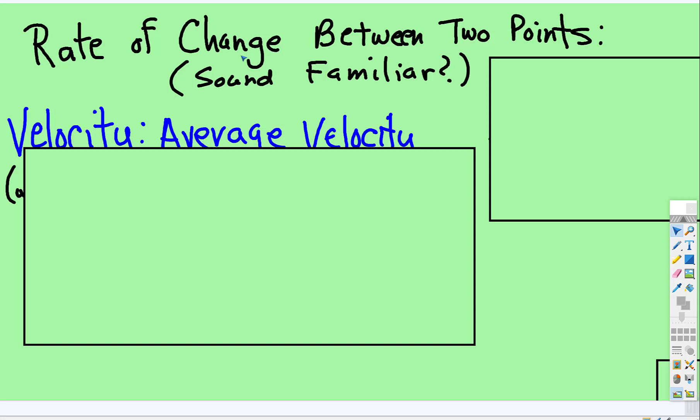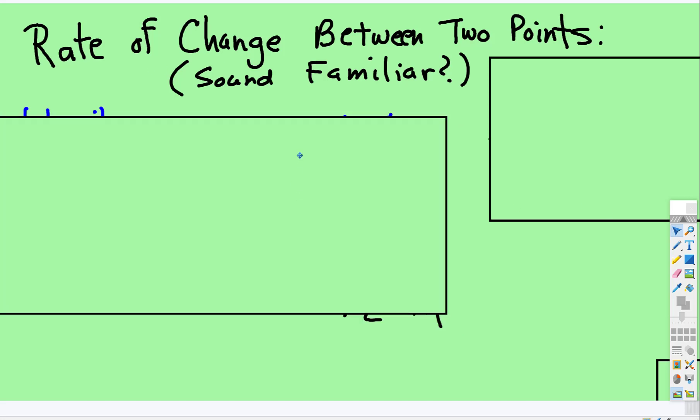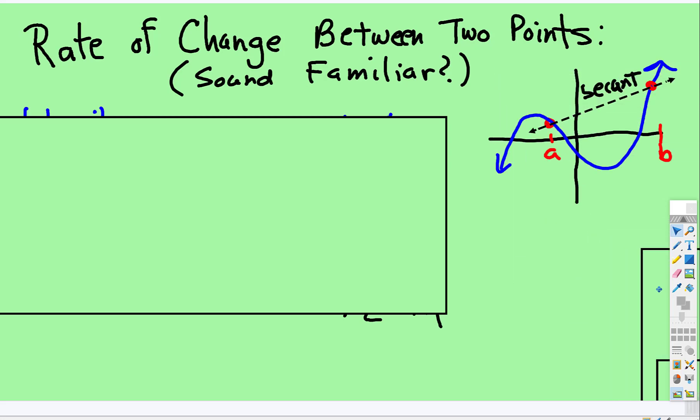Ok, rate of change between two points. Sound familiar? It should. Algebra 1, you learned about slope. Slope means the same thing as rate of change between two points.